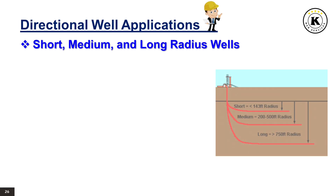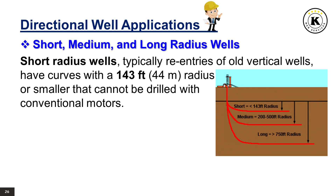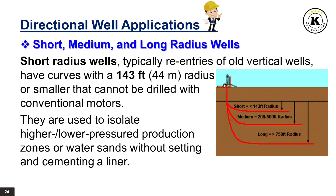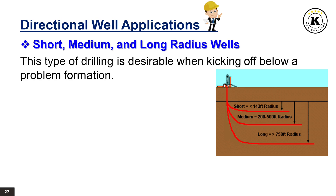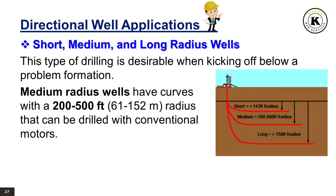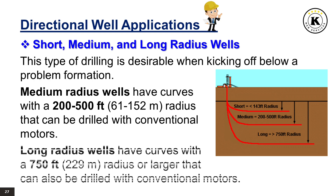Short, Medium, and Long Radius Wells: Short radius wells, typically re-entries of old vertical wells, have curves with a 143 feet (44 meters) radius or smaller that cannot be drilled with conventional motors. They are used to isolate higher or lower pressured production zones or water sands without setting and cementing a liner. This type of drilling is desirable when kicking off below a problem formation. Medium radius wells have curves with a 200 to 500 feet (61 to 152 meters) radius that can be drilled with conventional motors. Long radius wells have curves with a 750 feet (229 meters) radius or larger that can also be drilled with conventional motors.